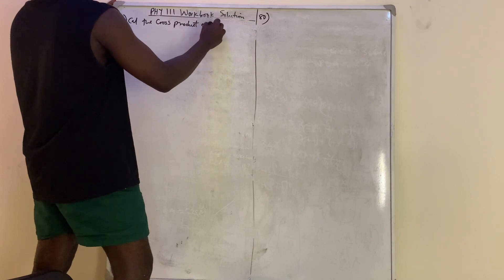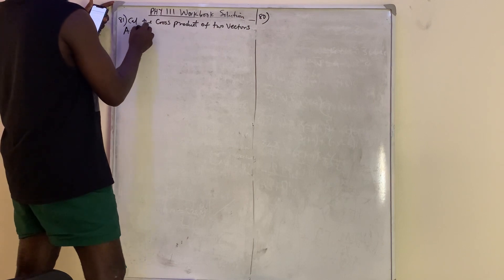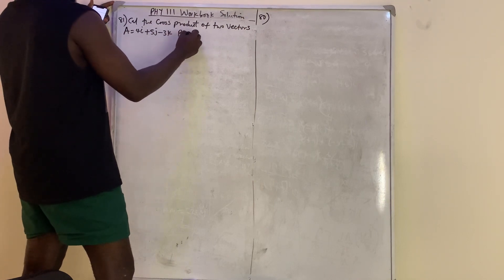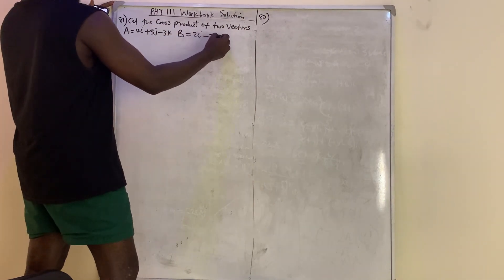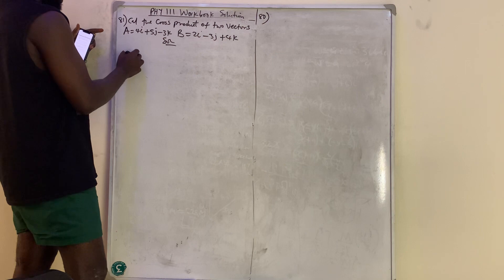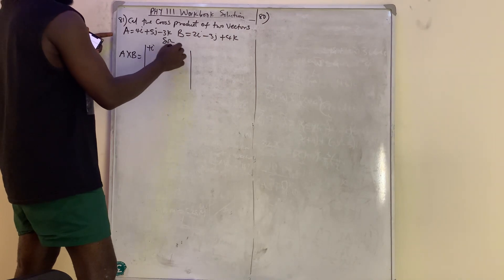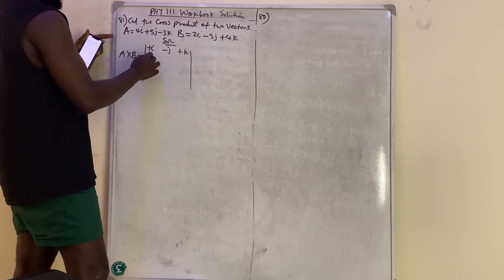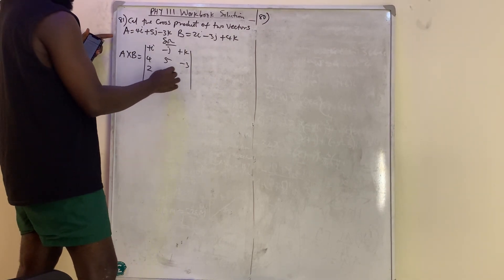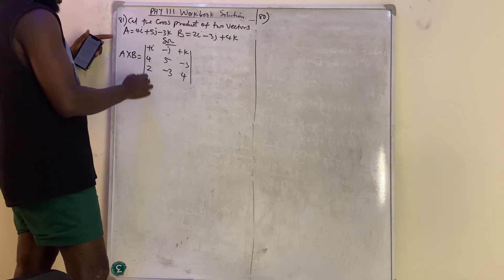Cross product of two vectors: vector a which is equal to 4i plus 5j minus 3k, and vector b which is equal to 2i minus 3j plus 4k. Solution: a cross b is equal to — don't forget your matrix — plus i minus j plus k. So I have my 4, 5, and minus 3 for the top row, and 2, minus 3, and 4 for the bottom row.